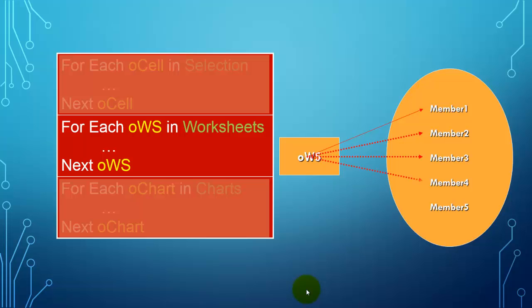To the third one. To the fourth one. To the fifth one. And then it knows the collection is finished. There are no more members. So it stops automatically. And it does that pretty quickly.